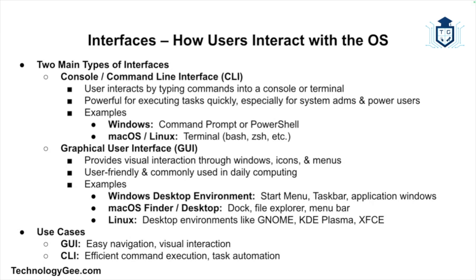Next let's talk about interfaces — the interface is how users interact with the operating system. There are two main types. The first is the console or command line interface (CLI), which allows users to interact with the operating system by typing commands into a console or terminal. While it may seem complex, it's very powerful for executing tasks quickly and efficiently, particularly for system administrators or power users. Examples include Windows Command Prompt or PowerShell, and for Mac and Linux, Bash or other shells.